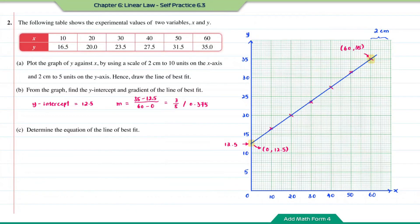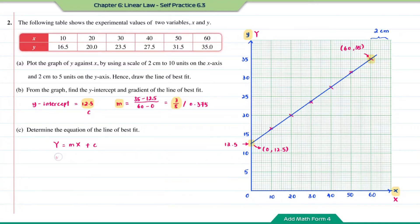Question C: determine the equation of the line of best fit. Since this is a straight line, the equation is Y equal to MX plus C. The variable on the y-axis is Y and on the x-axis is X. We already have M equal to 3 over 8 and C equal to 12.5. Substituting everything in, the equation of the line of best fit is Y equal to 3 over 8 times X plus 12.5.